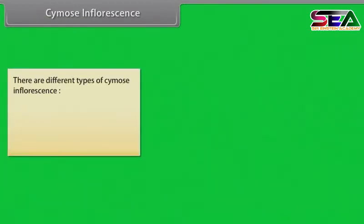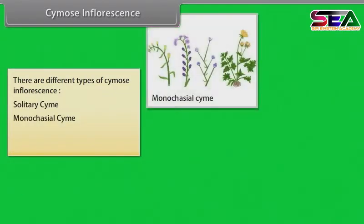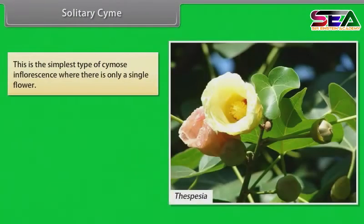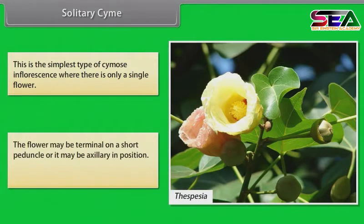There are different types of cymose inflorescence: solitary cyme, monocasial cyme, dicasial cyme, and polycasial cyme. Solitary cyme is the simplest type where there is only one single flower. The flower may be terminal on a short peduncle or it may be axillary in position. Example: Thespesia.